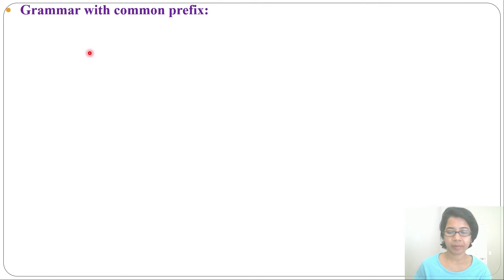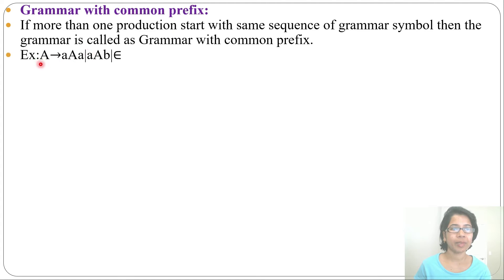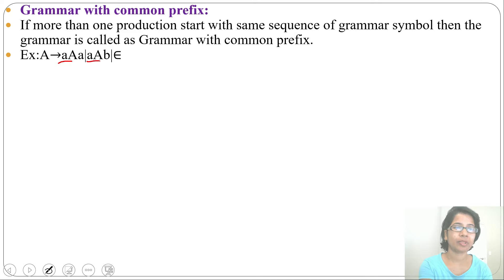Let's discuss grammar with common prefixes. If more than one production starts with the same sequence of grammar symbols, then the grammar is called a grammar with common prefixes. For example, from A we can derive aaa, aab, or epsilon. Here, 'aa' is common in both productions, so this is a common prefix.